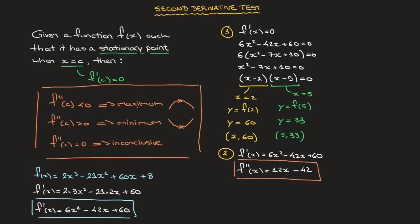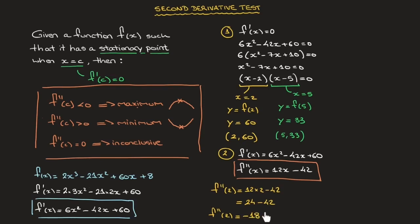When x = 2: f''(2) = 12(2) − 42 = 24 − 42 = −18. Since the second derivative is negative at the stationary point (2, 60), the second derivative test tells us that this stationary point is a maximum.